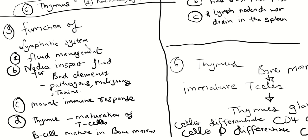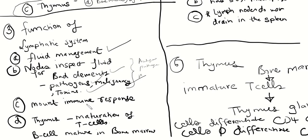We talked about the functions of the lymphatic system: fluid management — how extra fluid at the capillary level gets routed back into circulation. But the lymph nodes also inspect this fluid for antigens, pathogens, malignant cells, toxins, and debris — and mount an immune response. The thymus is where T cells mature, and B cells mature in the bone marrow. T cells must travel to the thymus to mature.